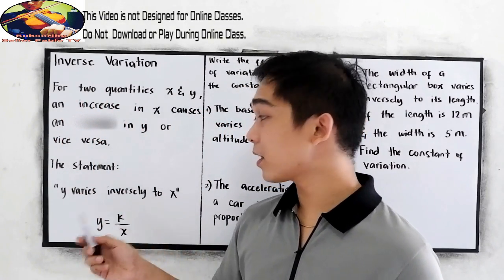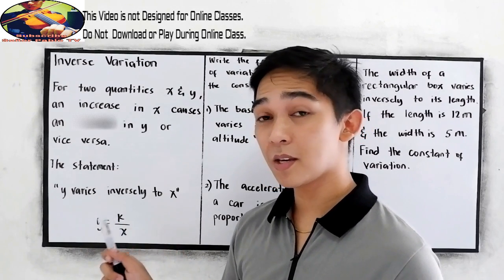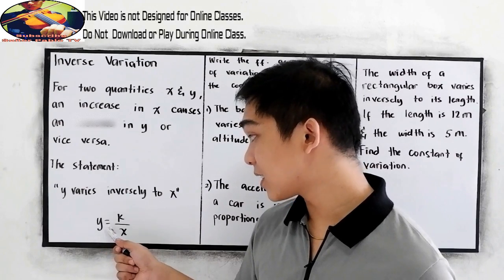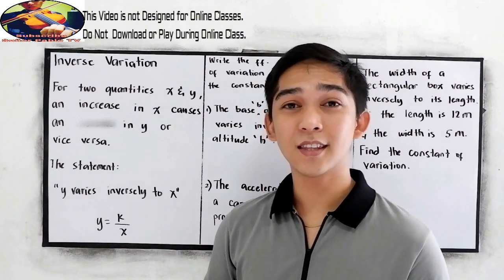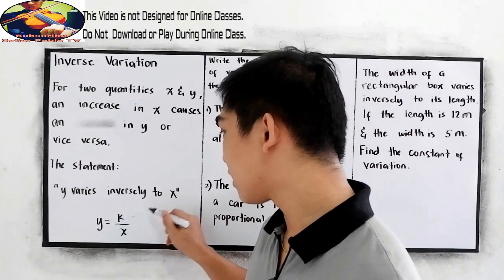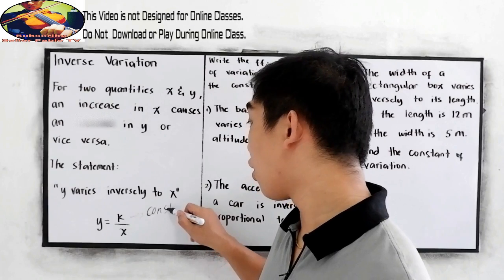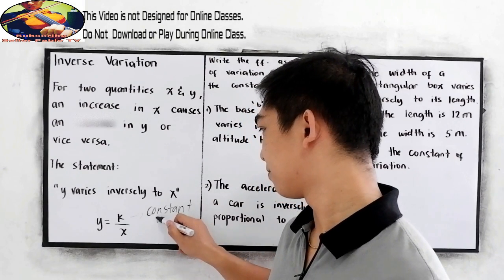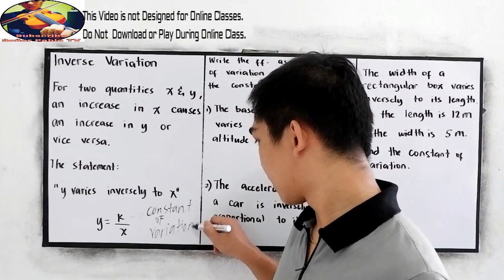The statement Y varies inversely to X can be translated to Y is equal to K over X, wherein K is the constant of variation.